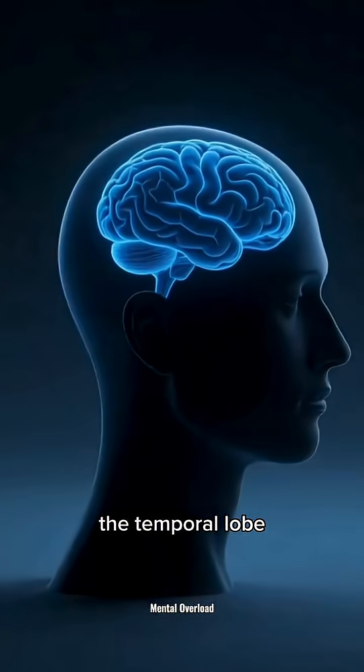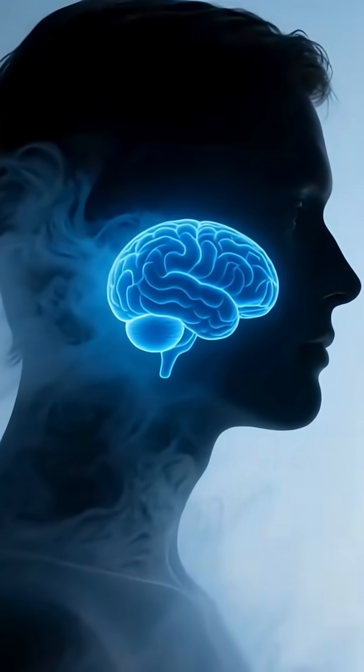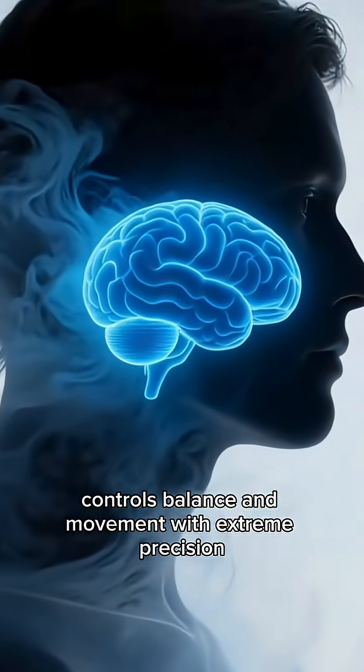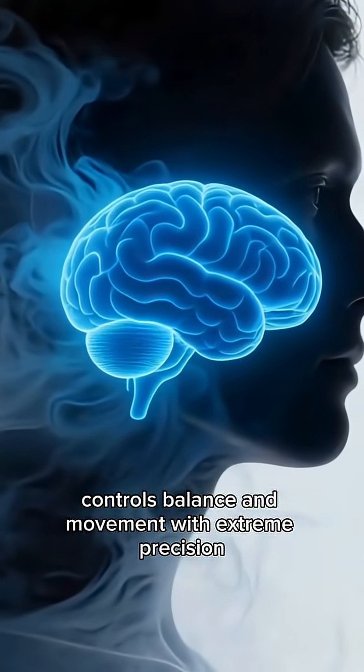The temporal lobe protects your memories and helps you understand language. The cerebellum controls balance and movement with extreme precision.